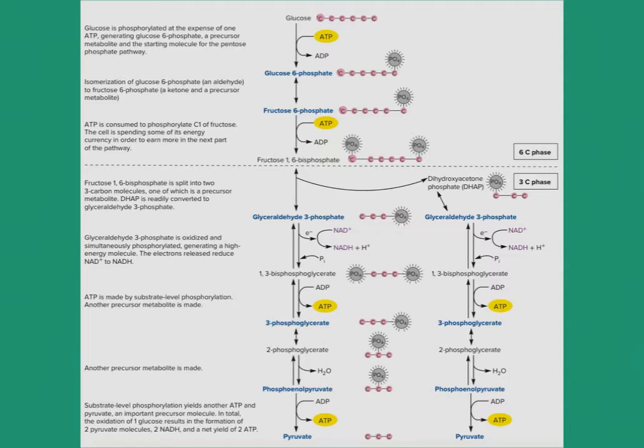This pathway then later on takes a turn to energy creation when fructose 1,6-phosphate is split into two 3-carbon molecules.